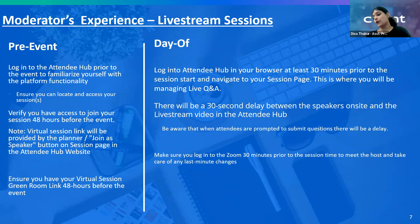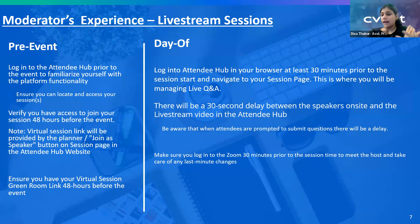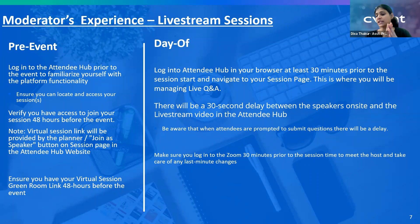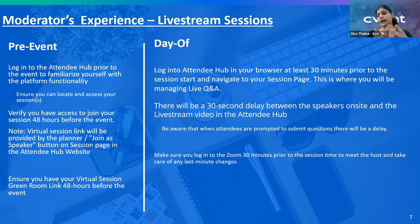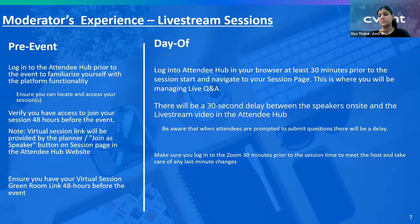When you as a host are about to end the live stream, speak with the speaker earlier — that's why we ask you to join the session 30 minutes early. Tell them that once they're done with their content, ask them to mute themselves or share an ending slide so you get the cue. Once everyone has muted themselves and gone off camera, give a good 30-second gap and then close the live streaming. If you do not give that 30-second gap at the end, it might end abruptly for the virtual attendees.